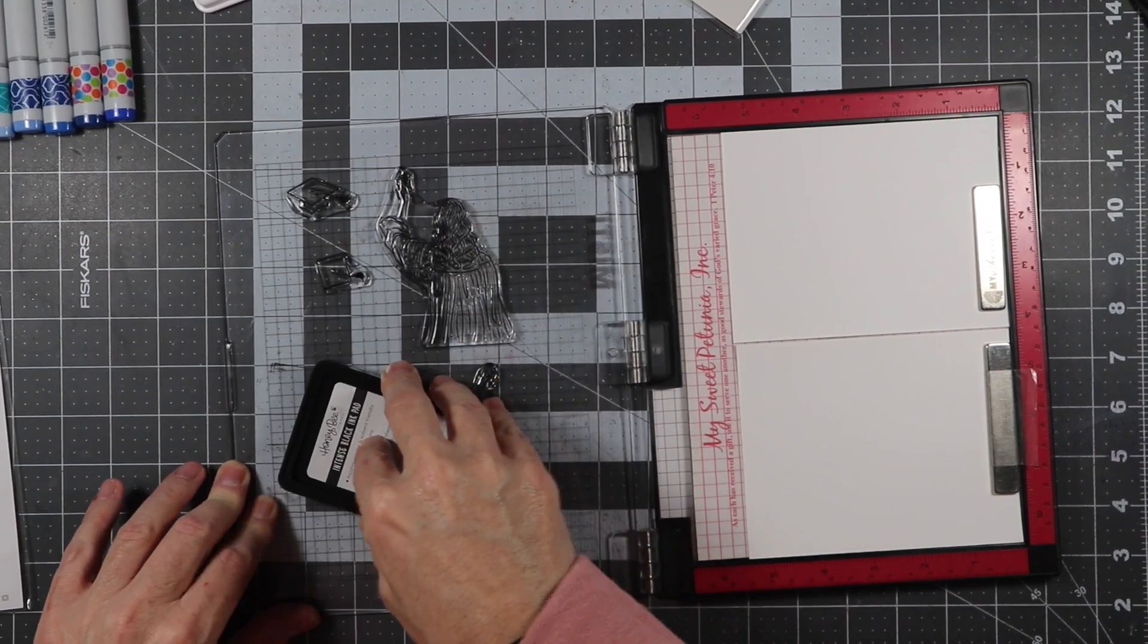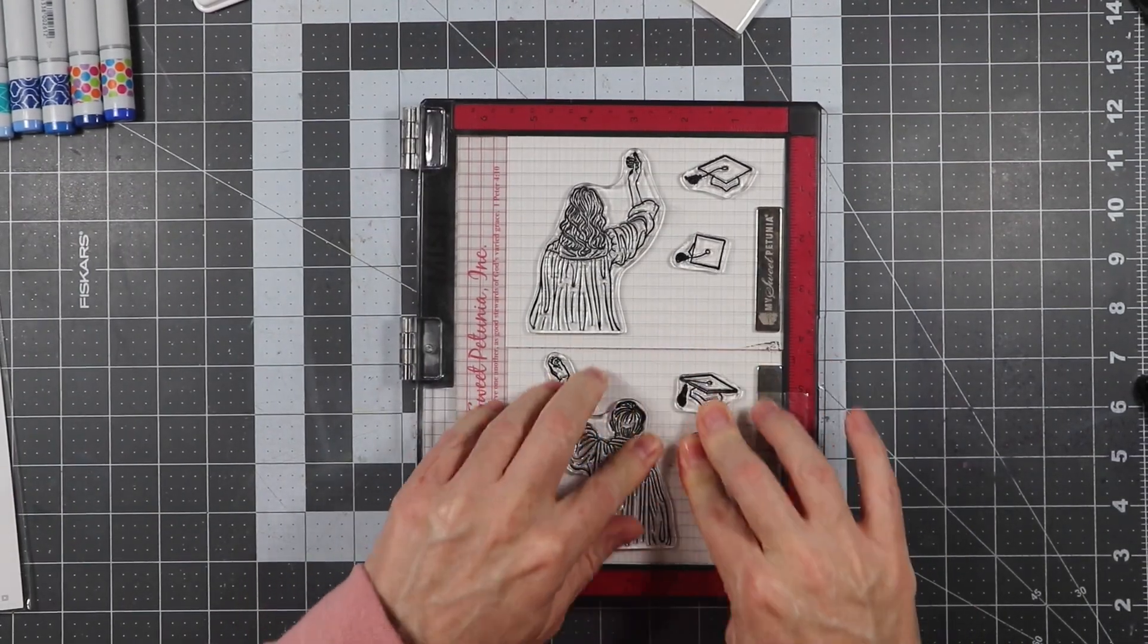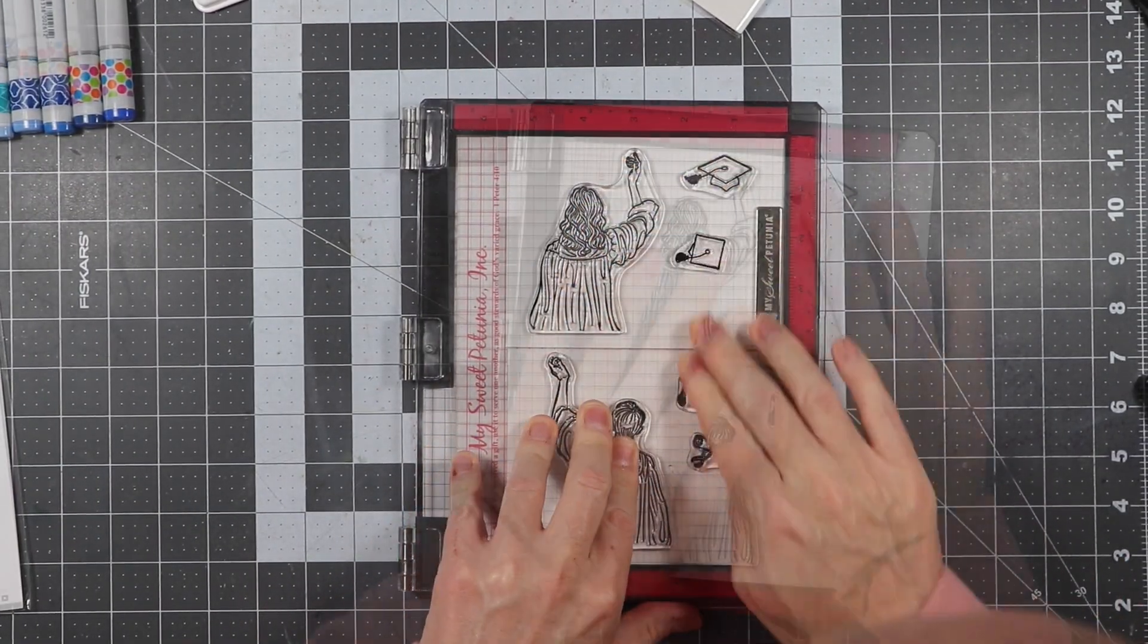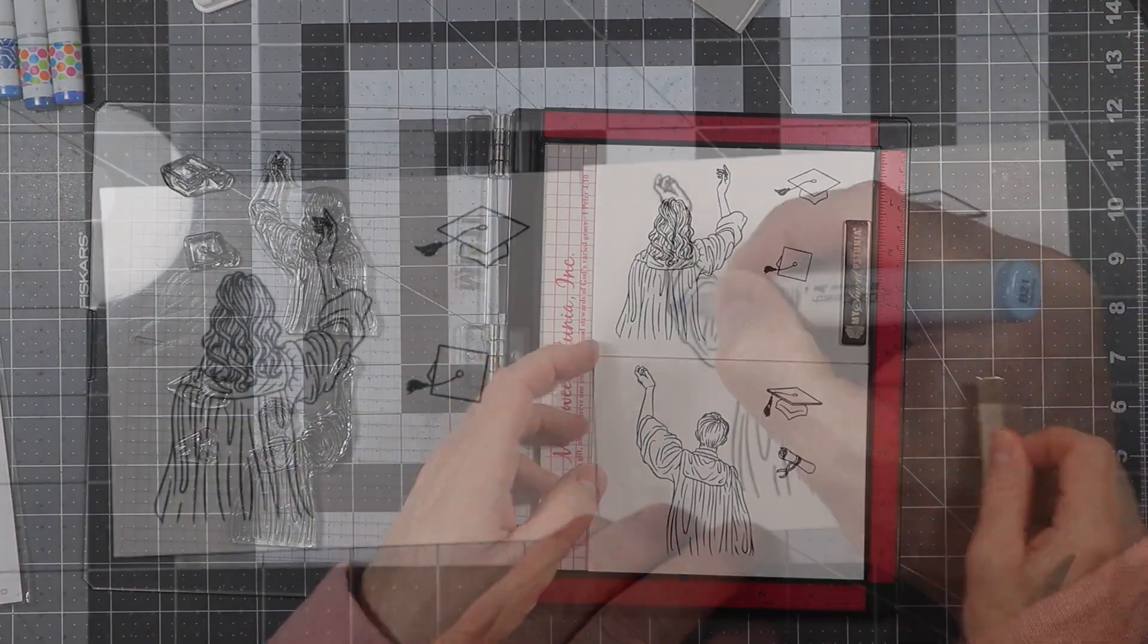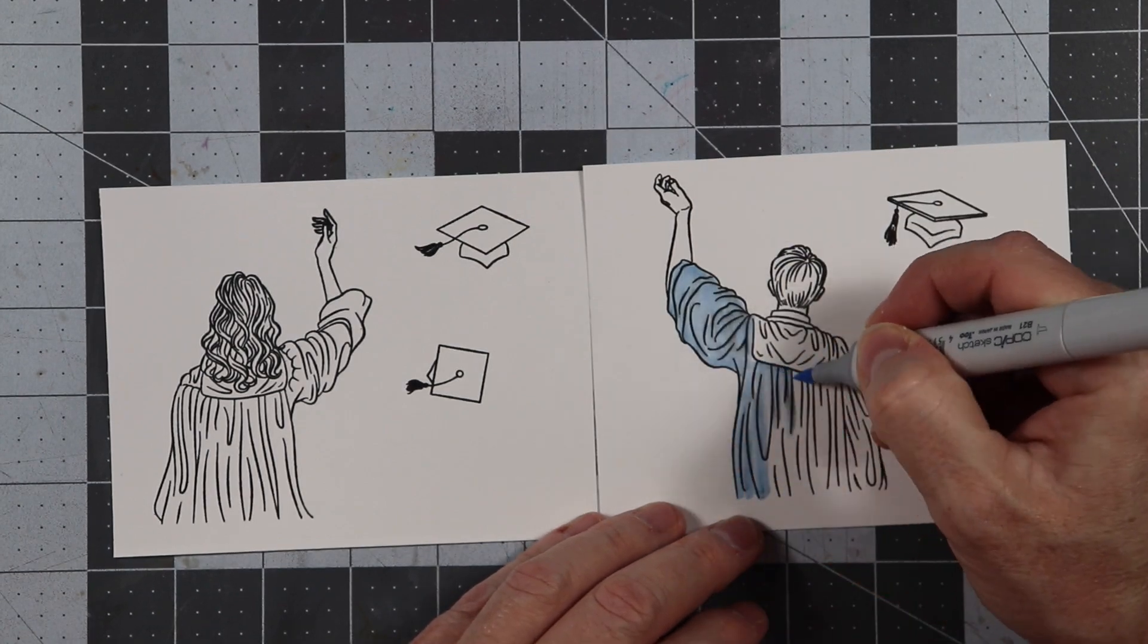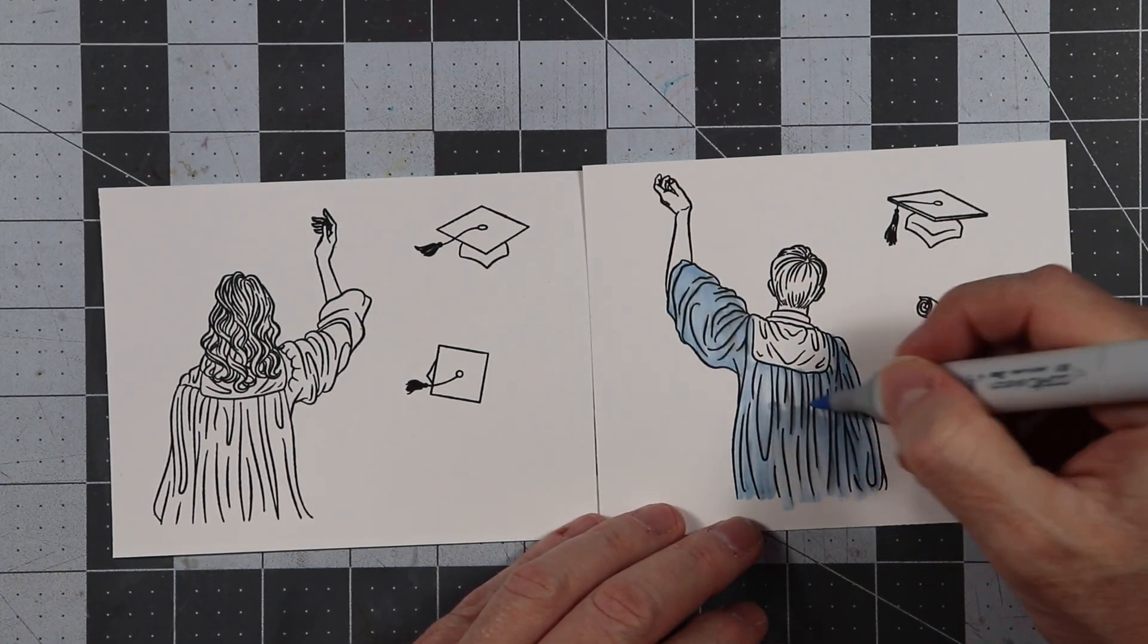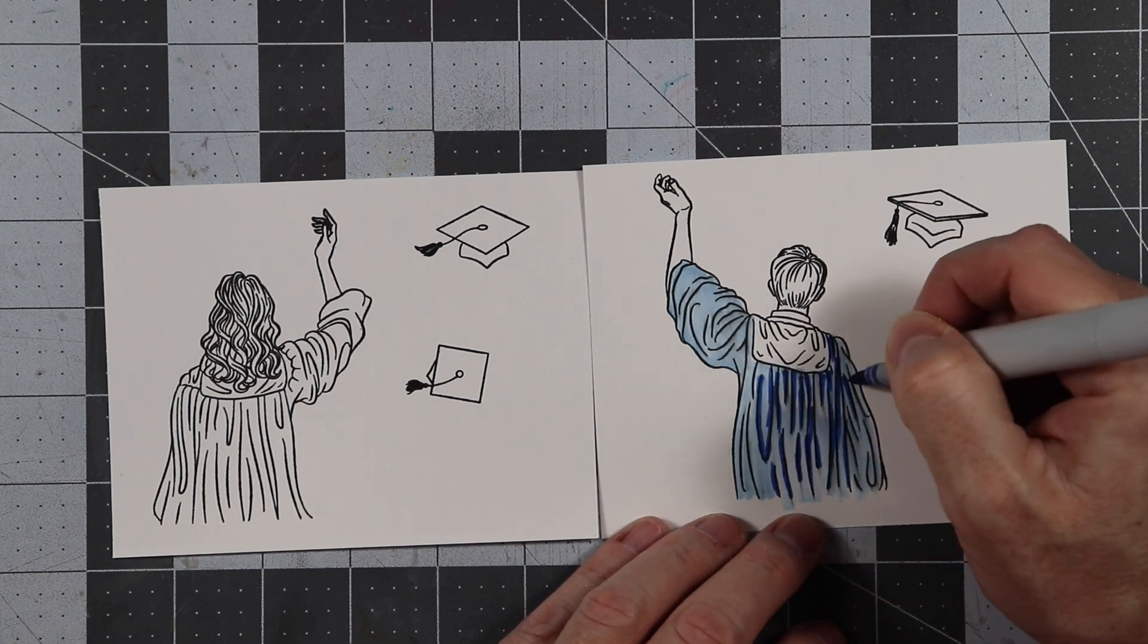I decided not to use that for my card, but I'll save it for later. So we go ahead and get those stamped out. We are using the Intense Black Ink from Honey Bee Stamps, and then we're just going to do some Copic coloring here. I'm going to do this super fast. I believe this is eight times faster than what I did it in.